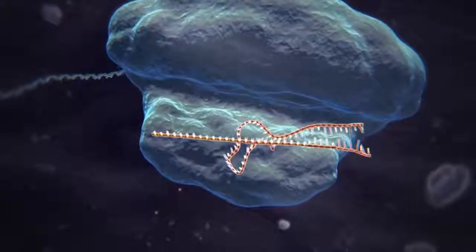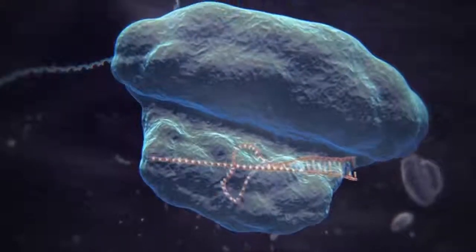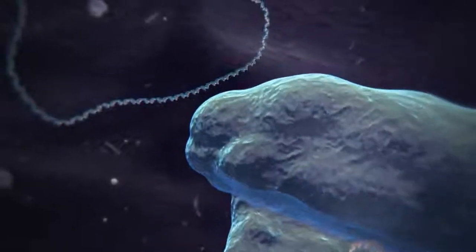These two RNAs form a complex with a protein called Cas9. Cas9 is a nuclease, a type of enzyme that can cut DNA.